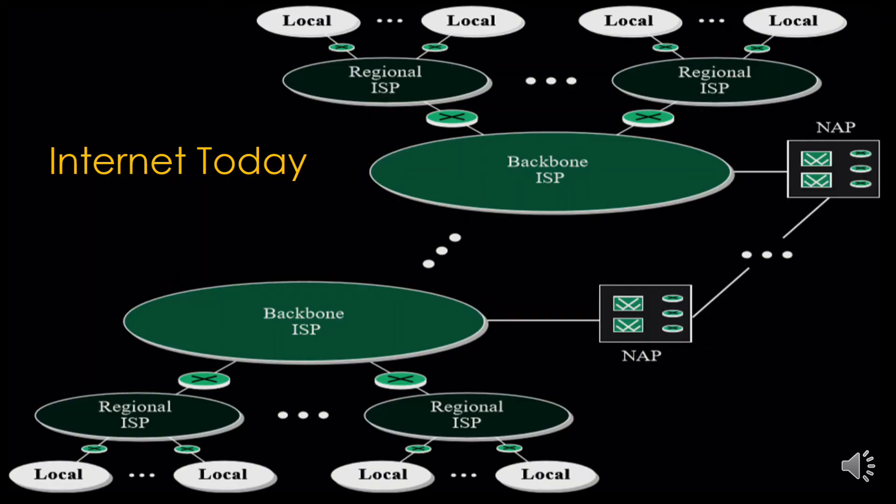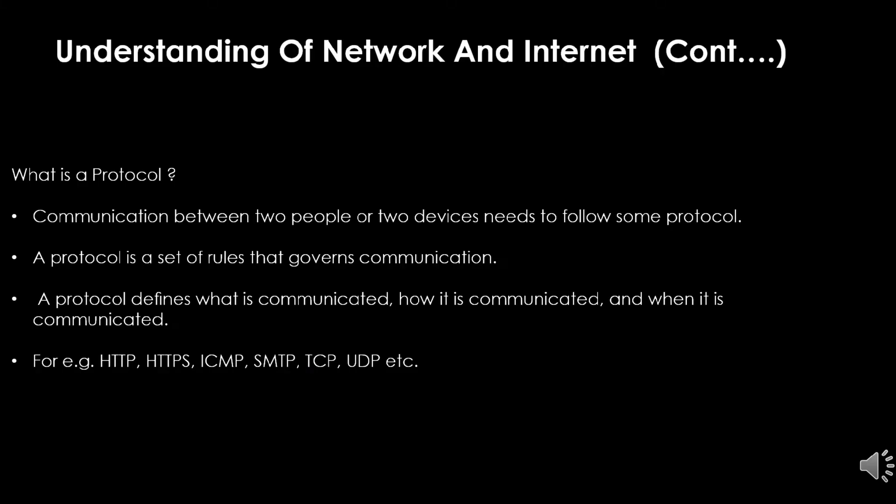Today's internet looks something like this. It is hierarchical in structure and is run by many different internet service providers. You have backbone ISPs at the top, then regional ISPs, and then local ISPs. So now we have studied what is a network, what is the internet, and a little bit about the history of the internet.